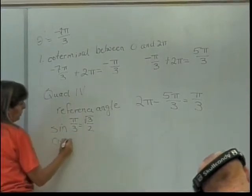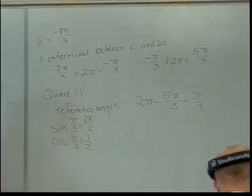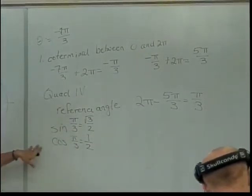What's the cosine of pi over 3? That's the 1 half one. Alright, now I've got the sine and the cosine for my reference angle.